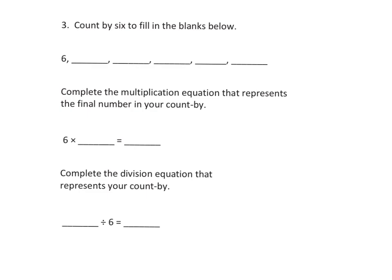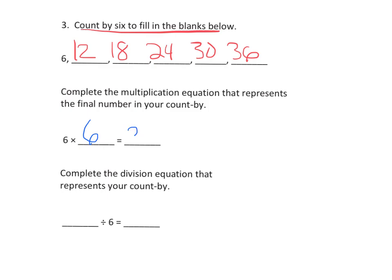Now we're going to practice. It says count by six to fill in the blanks: six, twelve, eighteen, twenty-four, thirty, thirty-six. We could use number bonds to do that. Now we know that six times six equals thirty-six, because we counted one, two, three, four, five, six — so six times six is thirty-six. And if we wanted to represent that with division, we would say thirty-six divided by six is six.